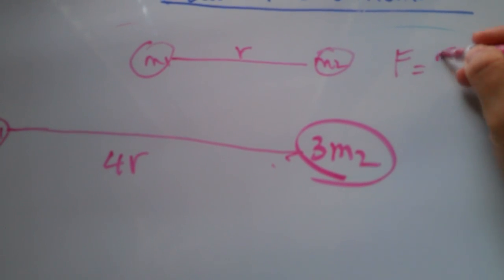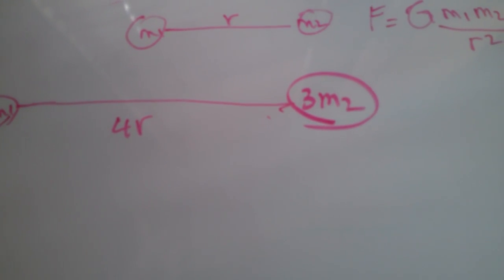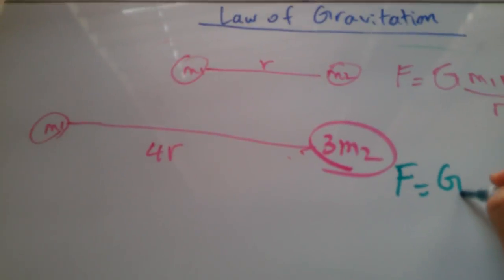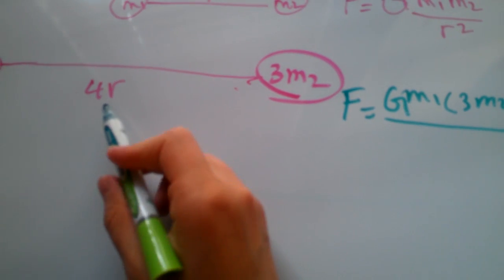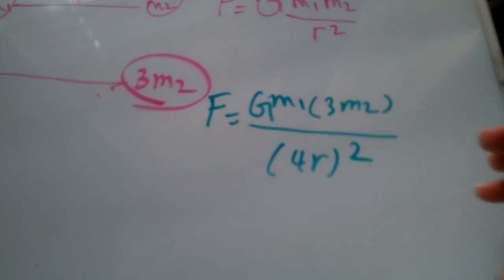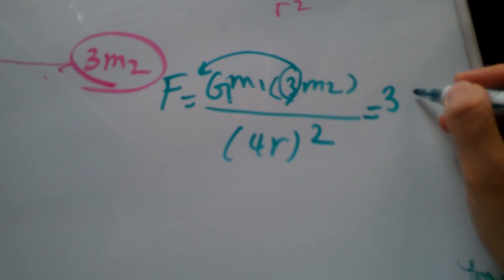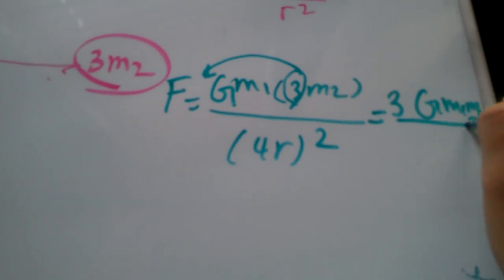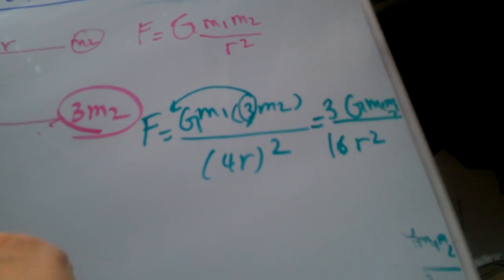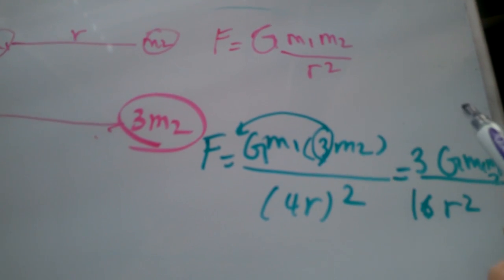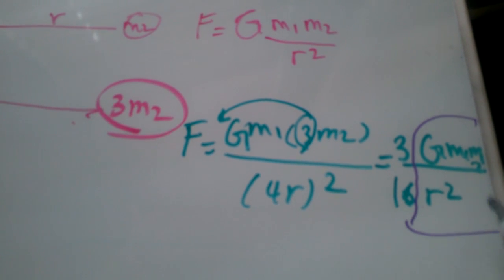If I ask you how the gravitational force is different from the first scenario, you got to do F is G m1 m2 over r squared for the first one. Now for the new one, is G m1 times 3m2 over 4r but squared. If I simplify things, I can pull this over as a coefficient of 3, G m1 m2 over 16r squared. So I have G m1 m2 over r squared here as well, so this is essentially that.